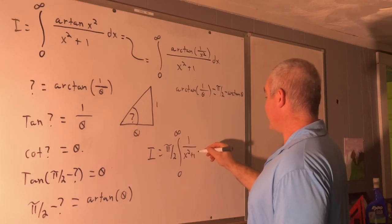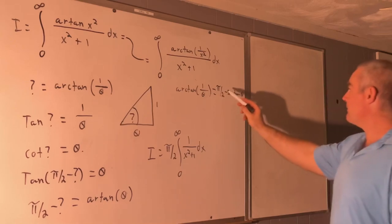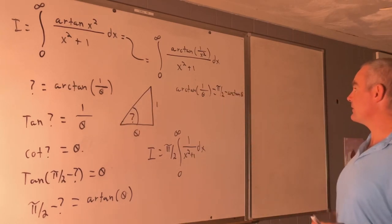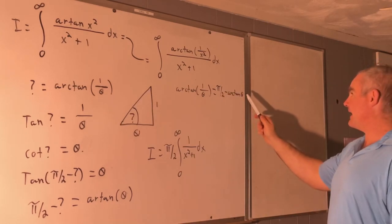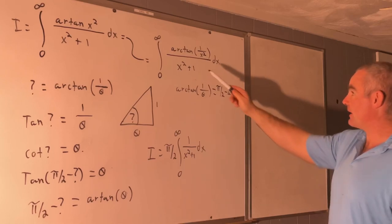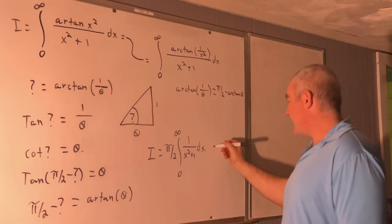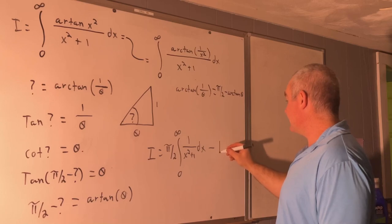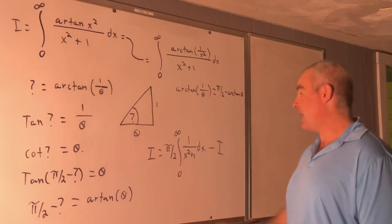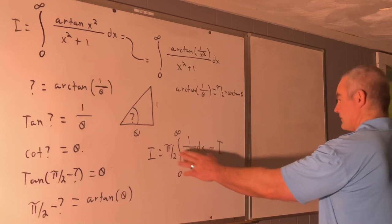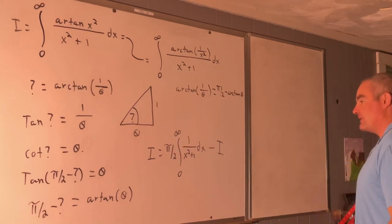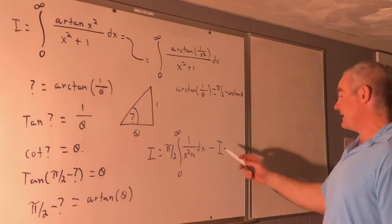Plus 1 dx. And then minus the integral from 0 to infinity of arc tangent x squared over x squared plus 1. But that's simply I. So this is what we're left with. I is equal to pi over 2 times the integral from 0 to infinity of 1 over x squared plus 1 dx minus I.